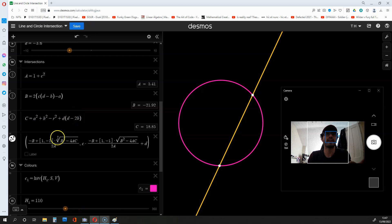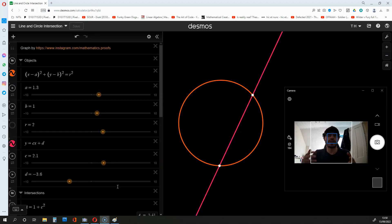We used the quadratic formula to get the x coordinates of the intersections, and we plugged this value of x into the equation of the line cx + d to get the y coordinates of the intersections. So that's how to find the intersections of a line and a circle on a two-dimensional graph. I've left the link to this Desmos graph just below this video, so click on it if you'd like to play around with this graph.